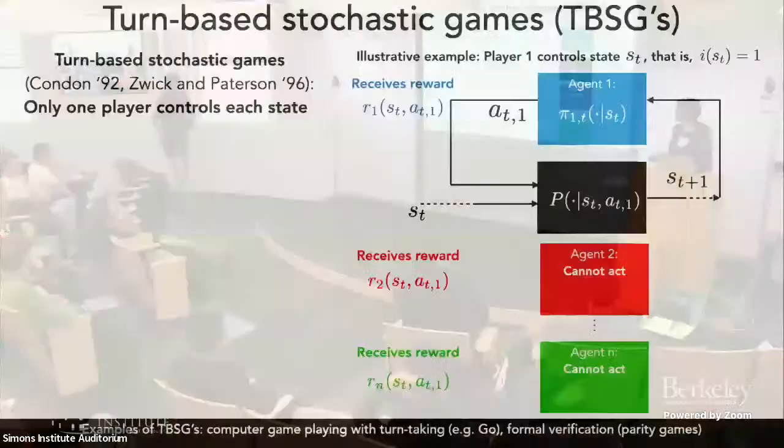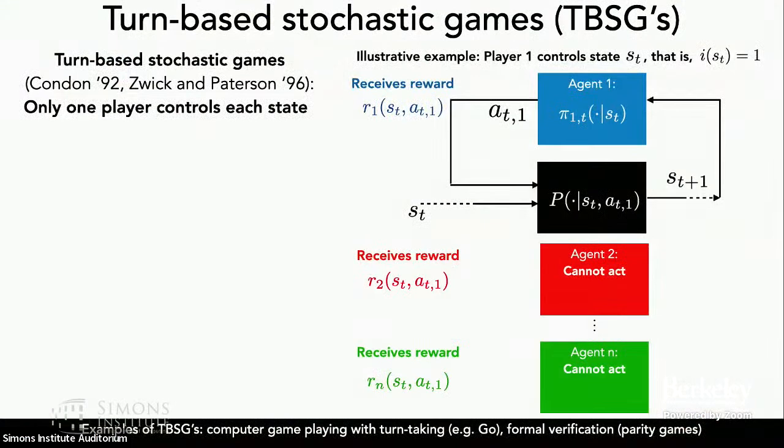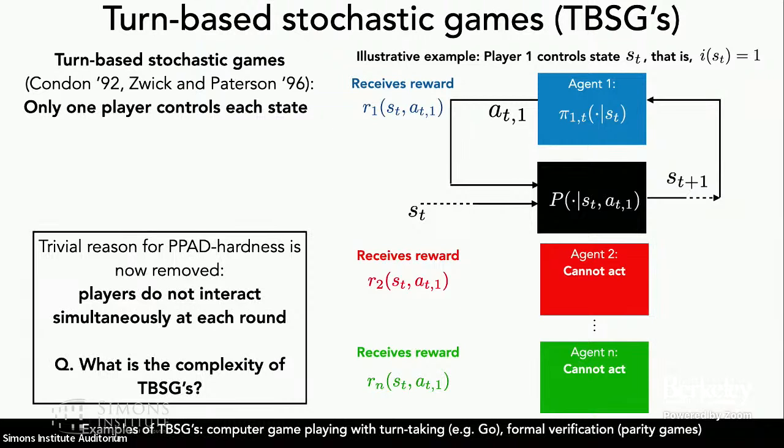At a high level, what you can see from this turn-based structure is that the trivial reason for PPAD hardness no longer exists. In general, this does not strictly generalize normal form games anymore. So the very natural question that comes up is whether it in fact remains hard to compute a Nash equilibrium of a turn-based stochastic game. This fundamental question forms the backbone of our talk today.